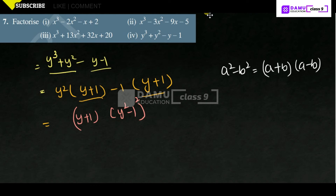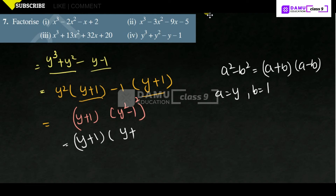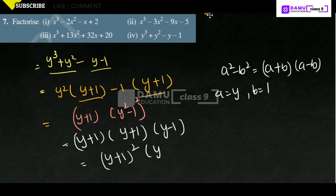Taking y + 1 outside gives (y + 1)(y² - 1). For y² - 1, write 1 as 1² — using the a² - b² = (a + b)(a - b) format. Here a = y and b = 1. So y + 1 into (y + 1)(y - 1), which you can write as (y + 1)² into (y - 1).